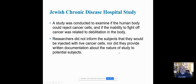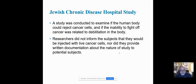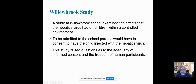Then you had the Jewish chronic disease hospital study. The study was conducted to examine if a human body could reject cancer itself. They wanted to see if subjects were going to be injected with live cancer cells. The subjects were not given any documentation about the study and the potential harm to them. They were being given cancer and not being told. The researchers wanted to see if their body types could help reject it.